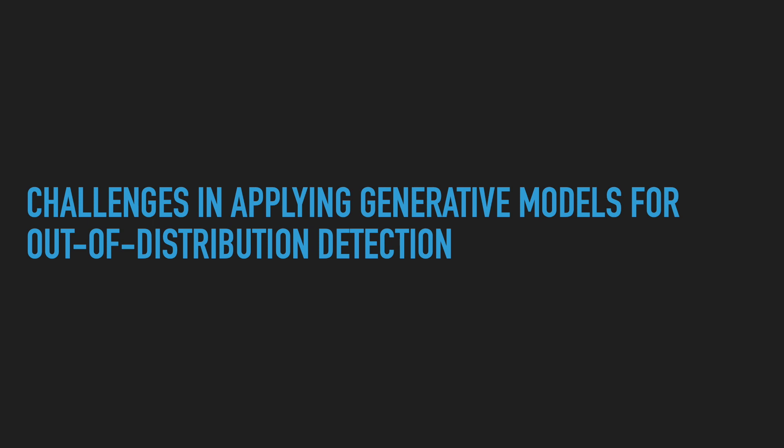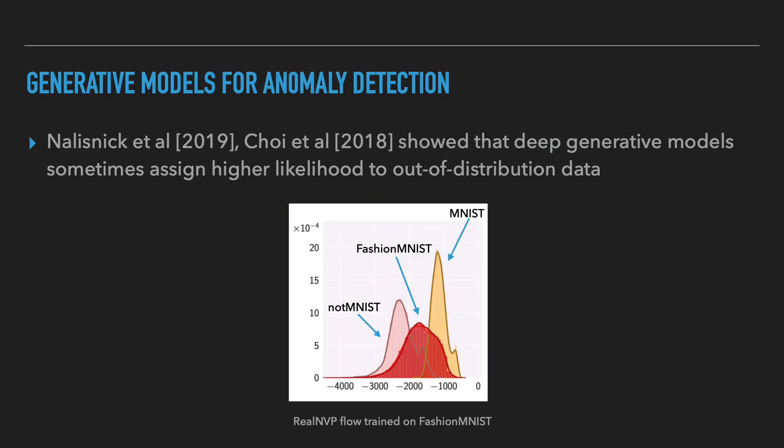Unfortunately, it turns out that standard DGMs typically fail to detect OOD data, even in seemingly very simple scenarios. In papers from Nalisnick, Choi and others, it was shown that generative models often assign similar or even higher likelihoods to out-of-distribution datasets compared to the data they were trained on. For example, the figure on the slide shows the distribution of likelihoods for different datasets of a flow model trained on Fashion MNIST. The likelihood for out-of-distribution MNIST is on average higher than the likelihood of Fashion MNIST, even though MNIST consists of handwritten digits and Fashion MNIST consists of images of clothes.